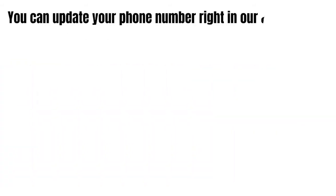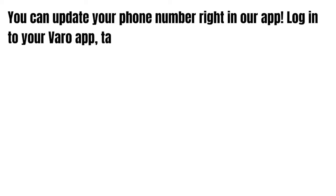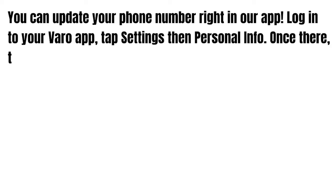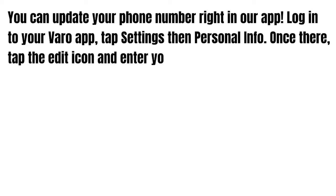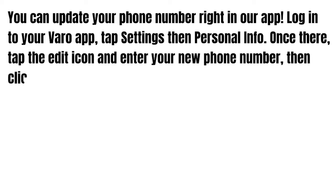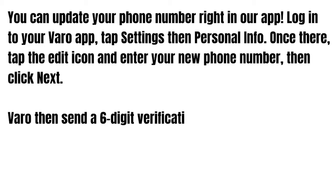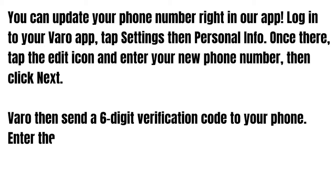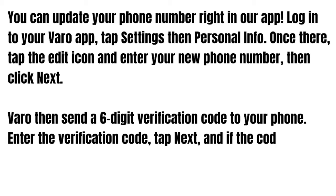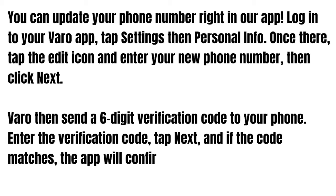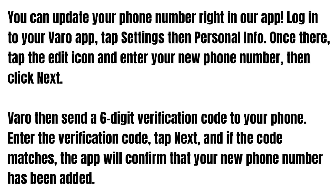You can update your phone number right in your app. Login to your Varo app and tap Settings, then Personal Info. Once there, tap the edit icon and enter your new phone number, then click Next. Varo will send you a six-digit verification code — enter the code, tap Next, and if the code matches, the app will confirm that your new phone number has been added.